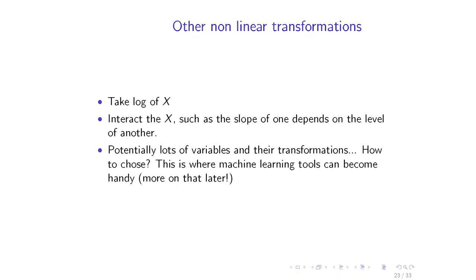You could also take the log of x, or interact the x's — in the same way we can interact dummies with a continuous variable to shift the slope. We can also interact two continuous regressors so that the slope of one depends on the level of another. If you have several x's that can be interacted in many flexible ways, you potentially have a lot of choices.